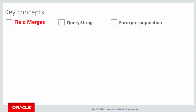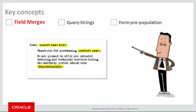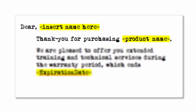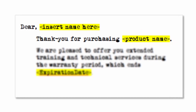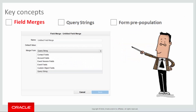Before I do, let's review the three key concepts in this video, starting with field merges. If you're familiar with form letters then you already know the principle behind field merges. Think of them as automated placeholders capable of taking data that's available to Eloqua and displaying it wherever you place the field merge, such as in a form field. You can create many types of field merges. One type is the query string field merge, which brings us to the next concept: query strings.